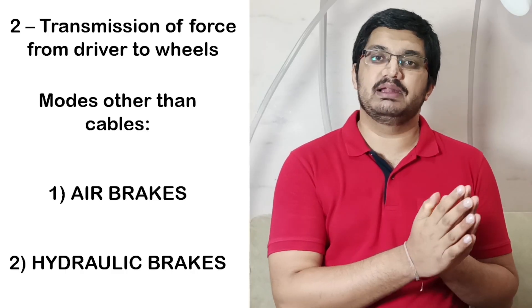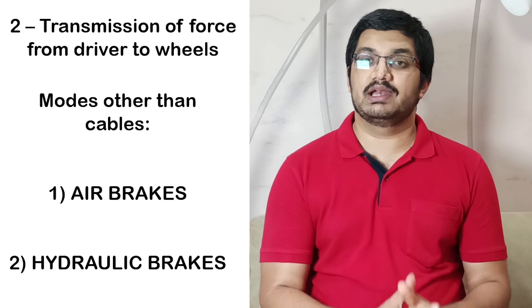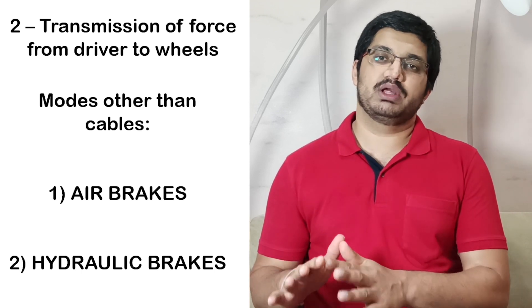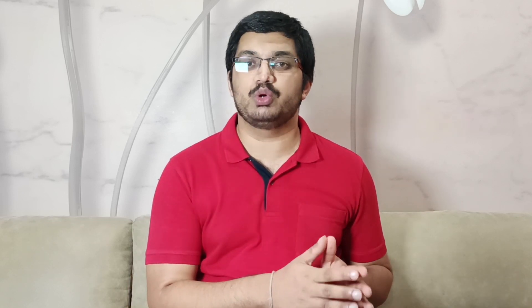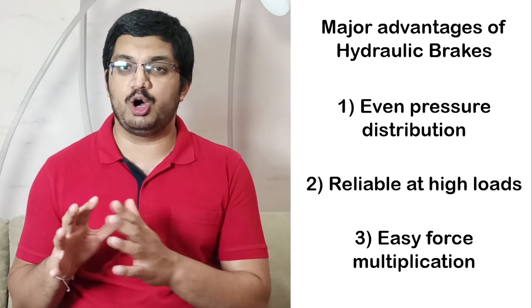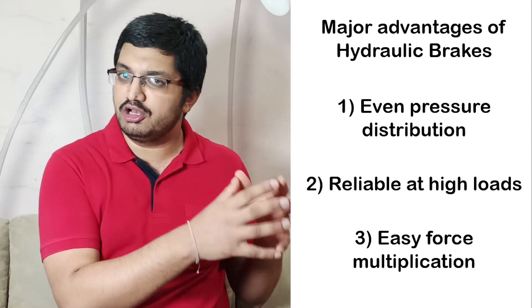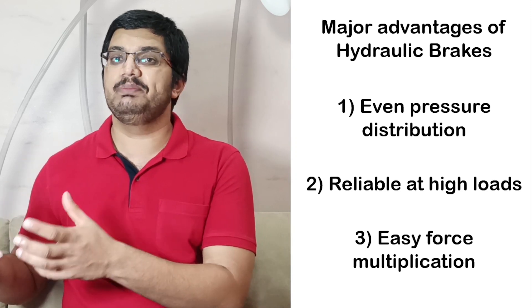Instead of cables, the most common way of transmitting braking force in a conventional passenger car is hydraulic brakes. Air brakes are used in very heavy commercial vehicles and locomotives, which we won't discuss here. Hydraulic brakes use a hydraulic oil or braking fluid to transmit the driver's force to the wheels, and they overcome all the disadvantages of cables — distributing pressure evenly to all wheels, handling very high forces, and multiplying a small driver force into a much larger force at the wheels.